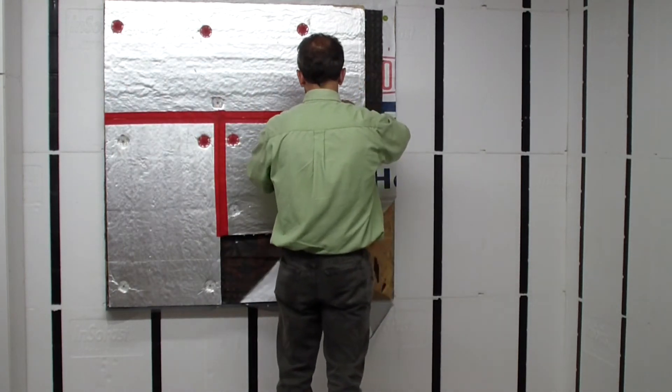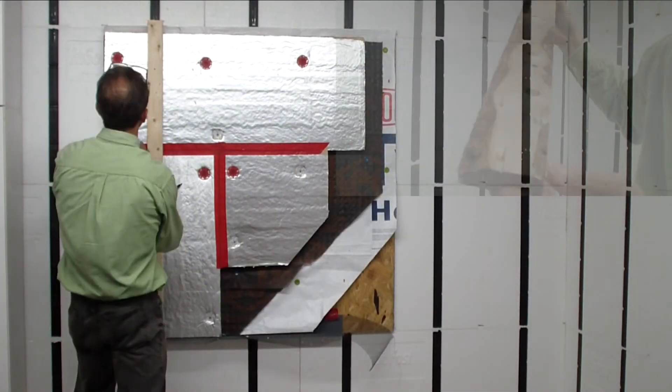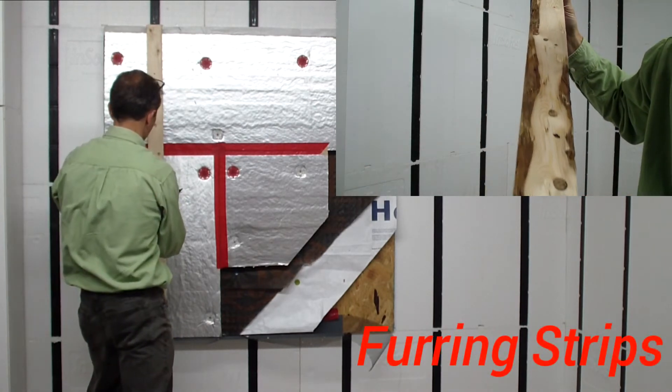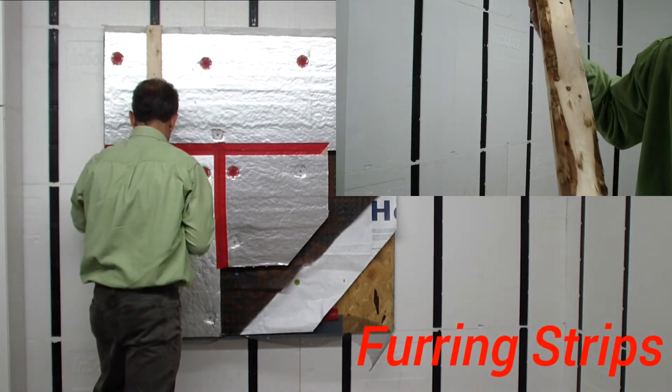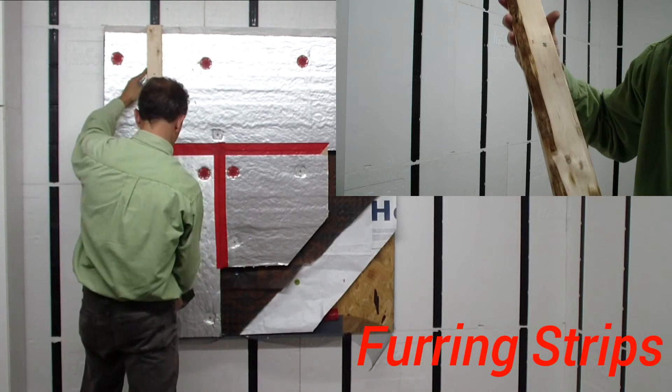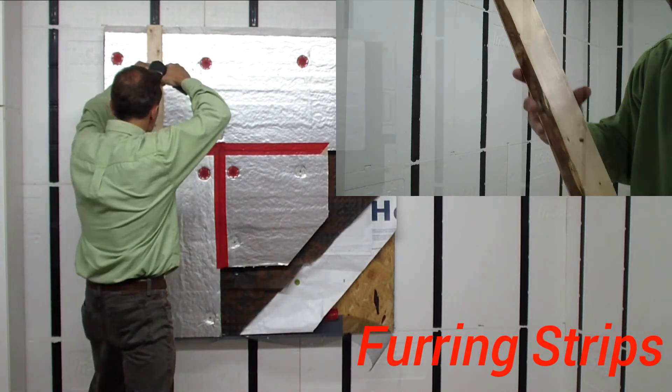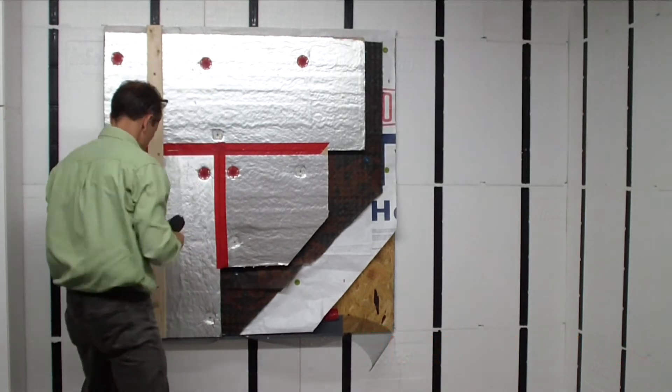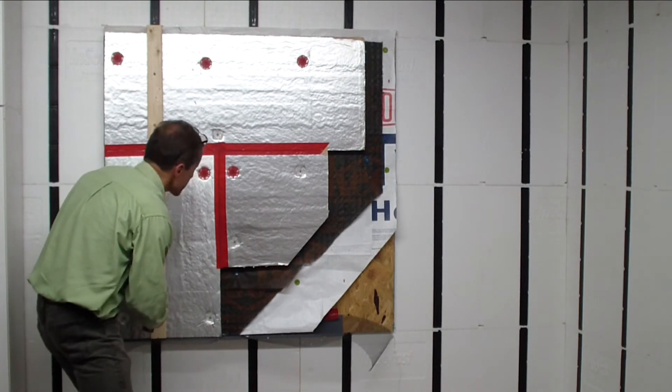The final step is to attach the furring strips to the wall. This will provide a secure attachment layer for your finishes. You will need extra long fasteners so you can penetrate through the furring strips, through the insulation, past the drainage mat, through the air barrier, through the sheathing, and into the structural framing members.